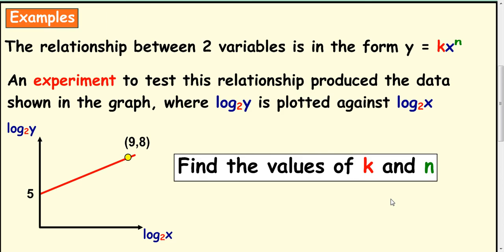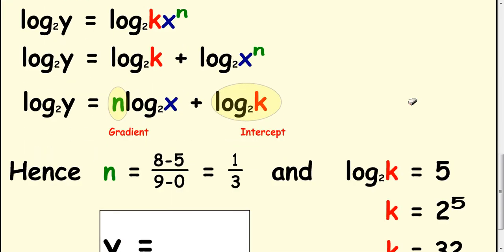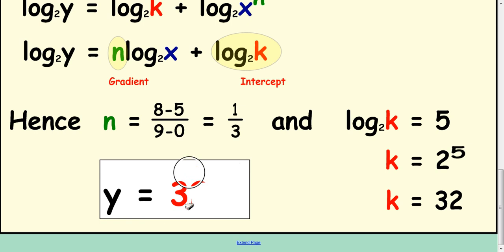So, basically what we're saying is, we've worked out the value of k, it's 32. We've worked out n to be 1 third. So, we can rewrite the equation as that. And that's it, you're finished. You've worked out the values of n and you've worked out the values of k.